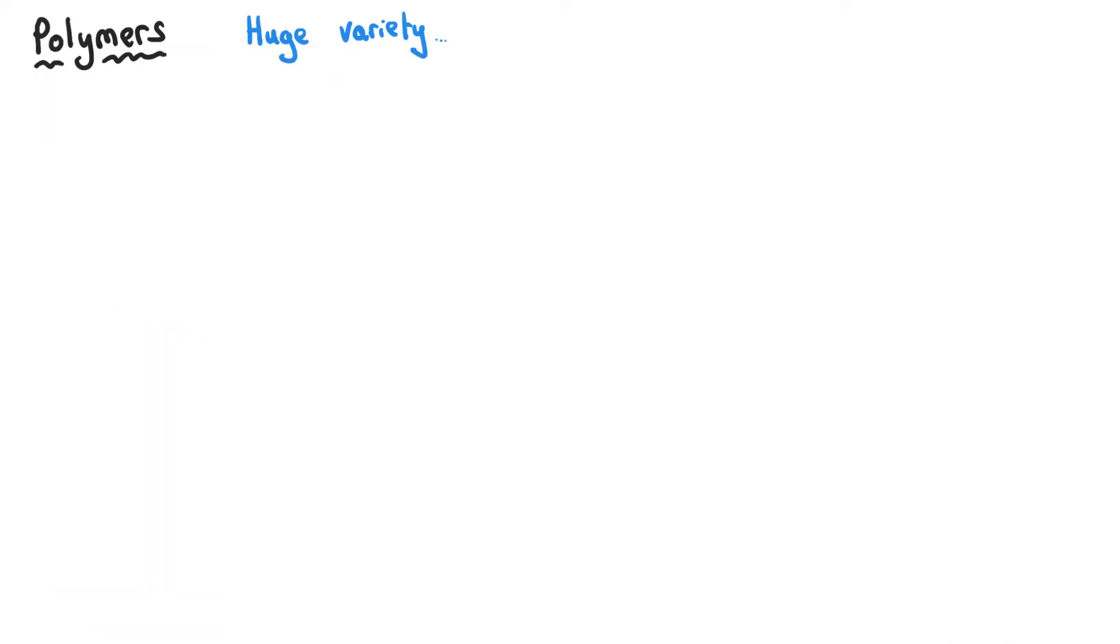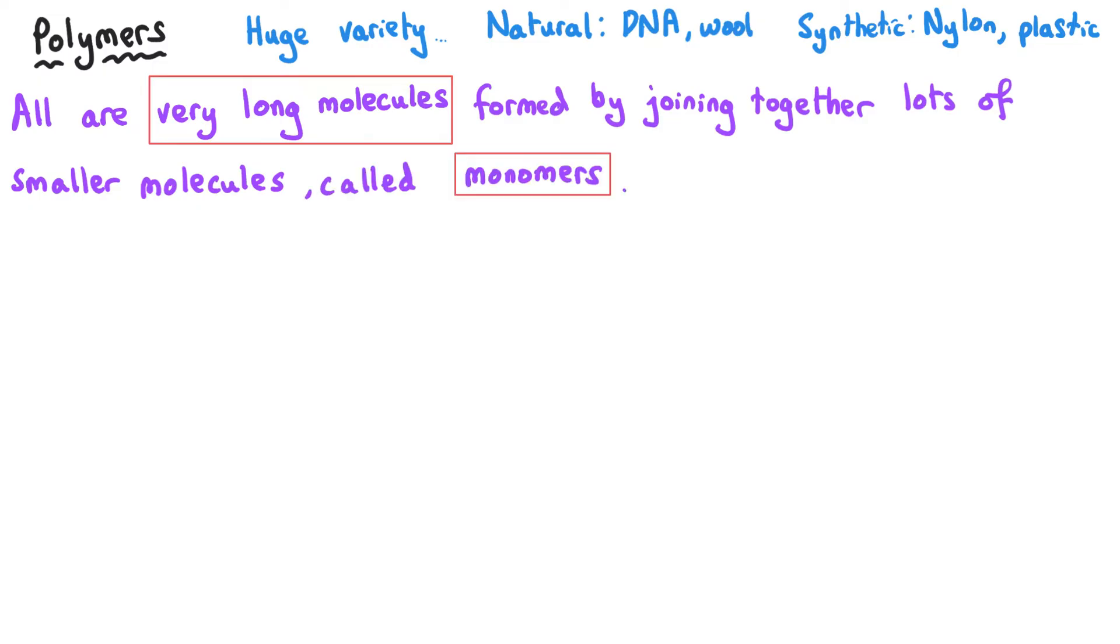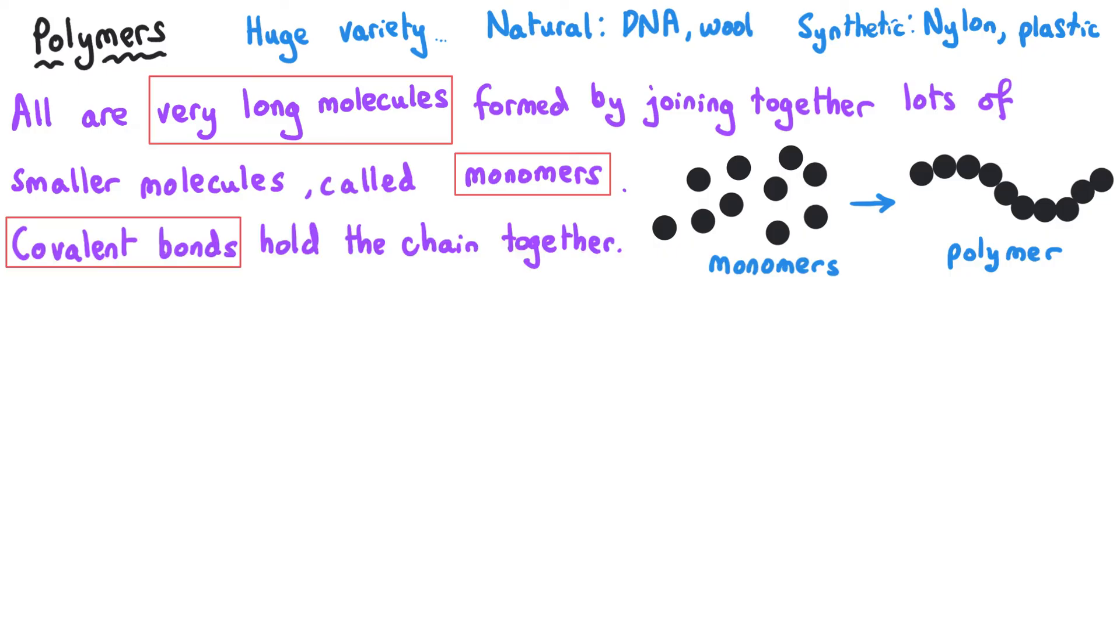There is an absolutely huge variety of polymers that we utilize in our day-to-day lives, some of which occur naturally and some are synthetic. What they all have in common is that they are all very long molecules that are formed when a large number of small molecules called monomers join together. These long-chained polymers are held together by covalent bonds between the atoms that make a sort of a backbone for the whole molecule, and these bonds are really really strong, which normally affects some of the properties of these polymers because these covalent bonds are hard to break.